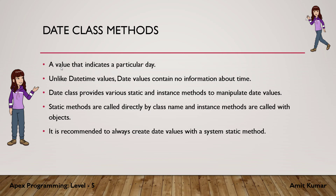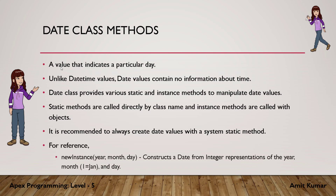It is recommended to always create date values with the newInstance static method. The newInstance method for Date accepts year, month, and day and creates a date from integer representations. For month, one is used to represent January, two for February, and so on. Any integer value can be represented for year and day. When we pass these three values to the newInstance method, it will create an instance of the Date class.